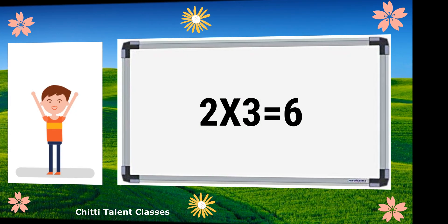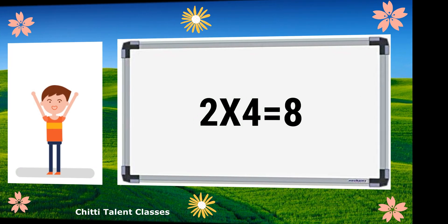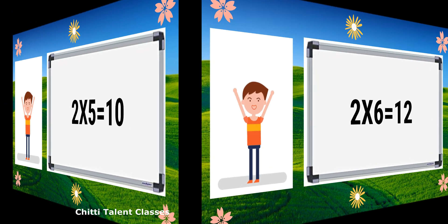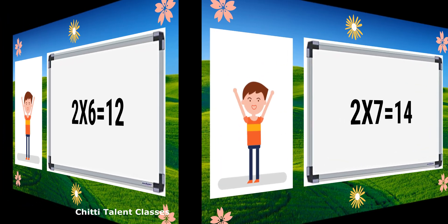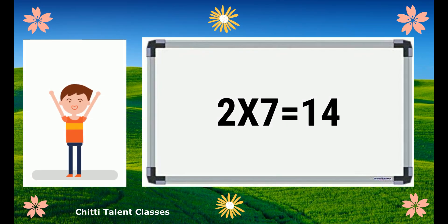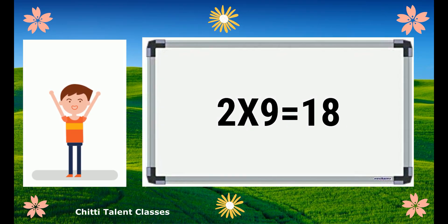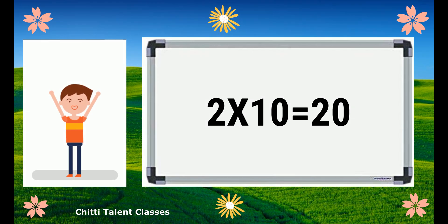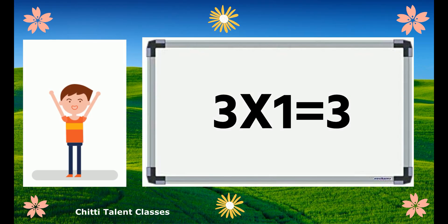Two 3s are 6. Two 4s are 8. Two 5s are 10. Two 6s are 12. Two 7s are 14. Two 8s are 16. Two 9s are 18. Two 10s are 20. Three 1s are 3.